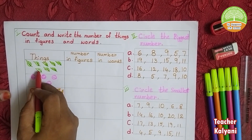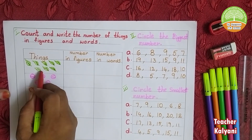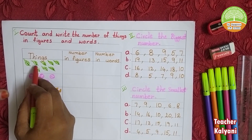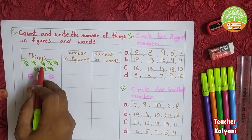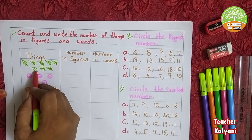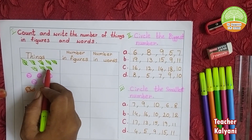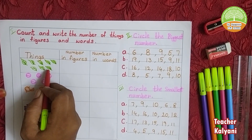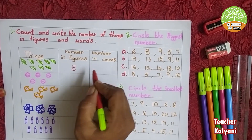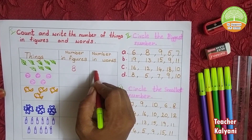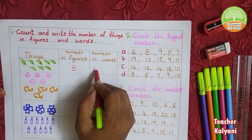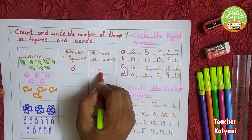First, we count leaves: 1, 2, 3, 4, 5, 6, 7, 8. Okay, 8. Number in words: E, I, G, H, T.